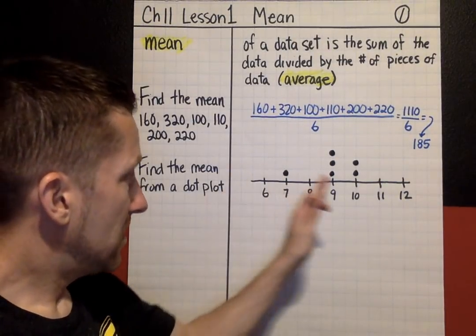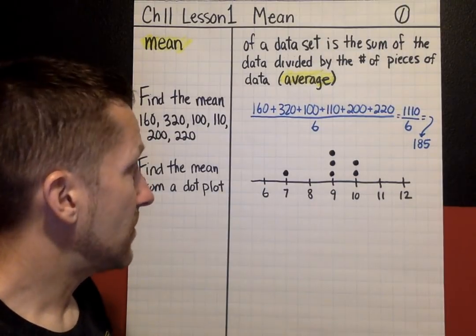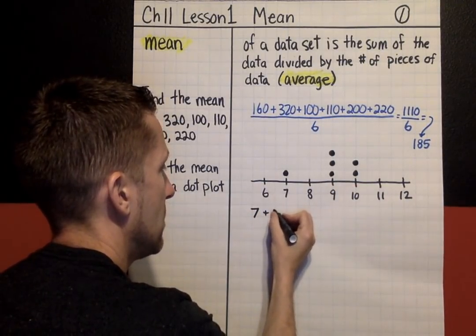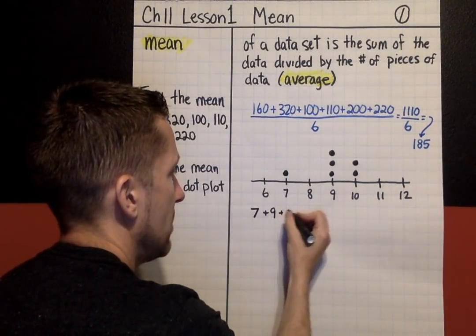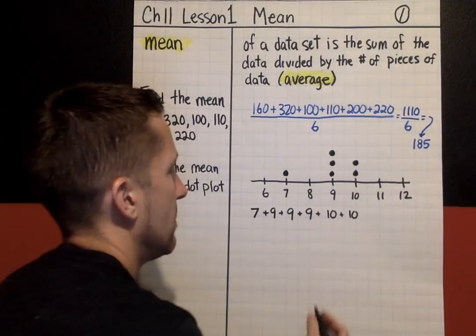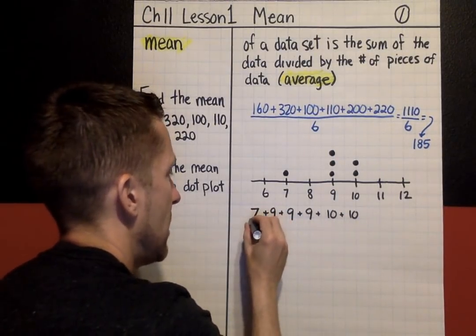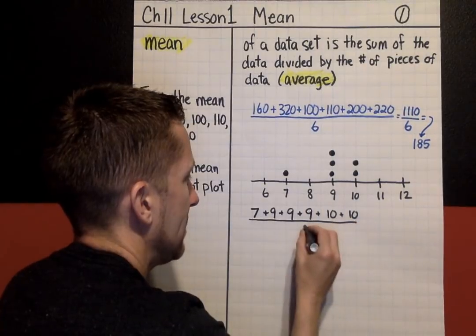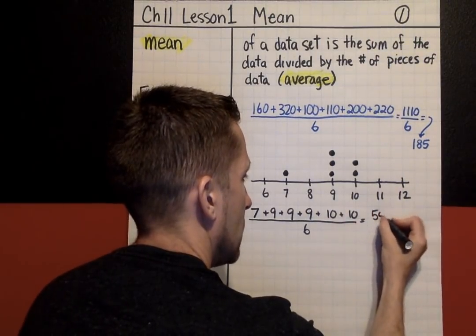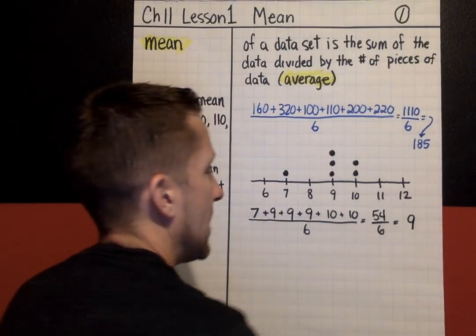If you have a dot plot, what you're going to have to do is read the dot plot and just write down the values of data from the dot plot. I'm just going to start writing down my data values: 7 plus 9 plus 9 plus 9 plus 10 plus 10. Good idea to count, 1, 2, 3, 4, 5, 6. I should have 6 data values, and now I know I'm dividing that sum by 6 values. I add all those up on my calculator and I get 54 over 6. 54 divided by 6, the mean or the average of that data is 9.